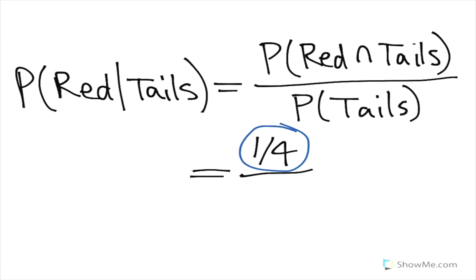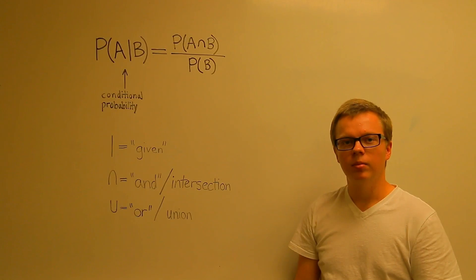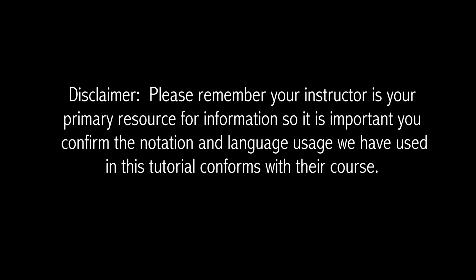So that is our denominator and once again this comes out to one-half. Conditional probabilities won't always be equal like this, but in this case they were. I hope these examples helped. That's all we have today about conditional probability. If you have any further questions, please ask your instructor or come into the tutoring center. Thank you.